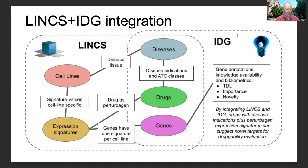From LINCS experiments, gene expression signatures quantify the effect of small molecule perturbogens on a diverse array of cell lines. IDG associates drugs with diseases via approved drug indication and facilitates rapid and in-depth drugability evaluation for associated genes.